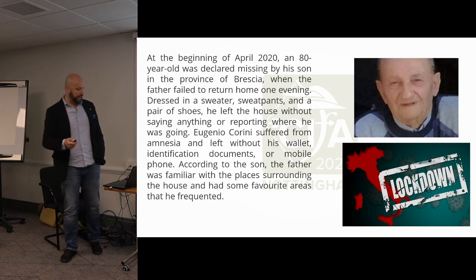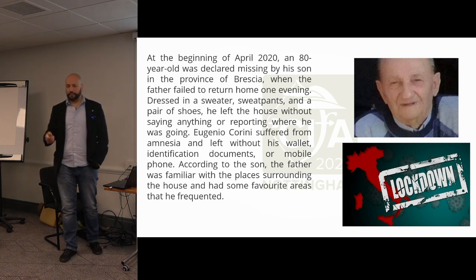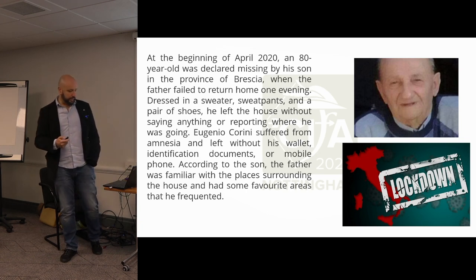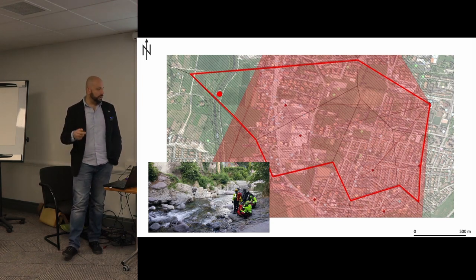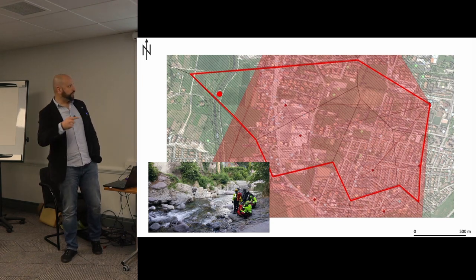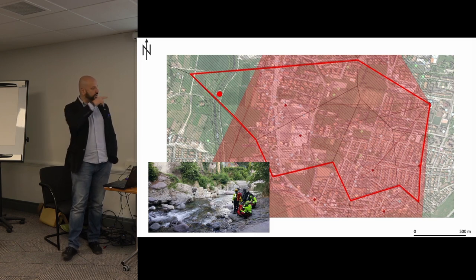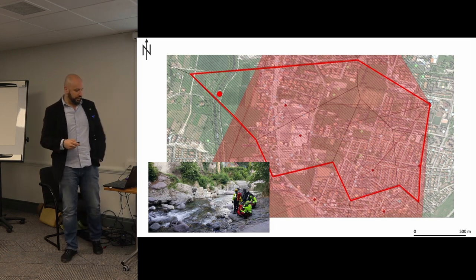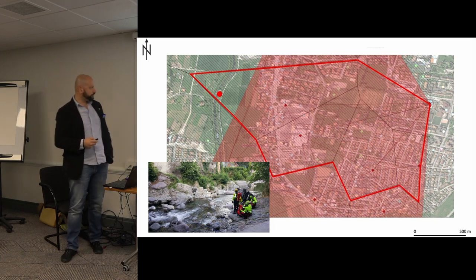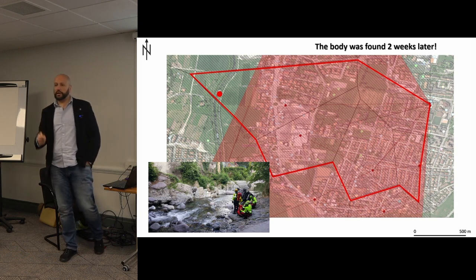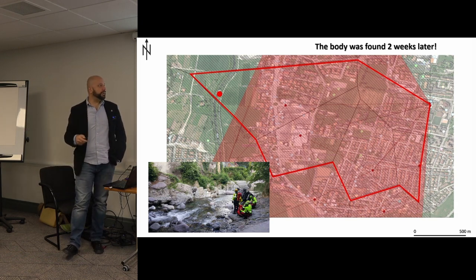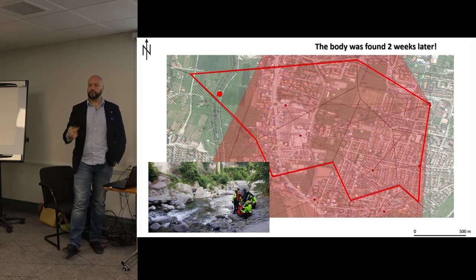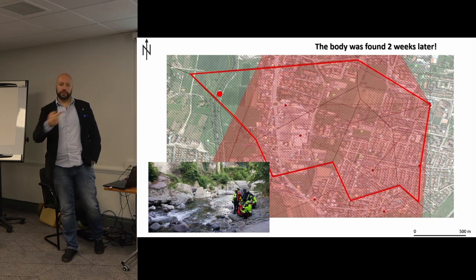Another Italian case — in the previous case it was a young lady; this one is an old man who disappeared in northern Italy. The locus operandi in this case was not a circle but a different kind of geometry, and the body was found where you see the big red dot. Again, it was used as a last resort, and the body was found two weeks later. The day after I was called for the locus operandi, the day after that they found the body.